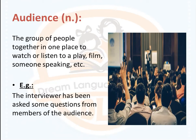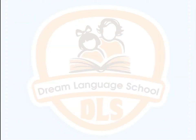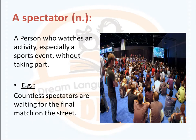Next: 'spectator.' A spectator is a noun and it means a person who watches an activity, like the picture — especially a sports event — without taking part. Example: countless spectators are waiting for the final match on the street.